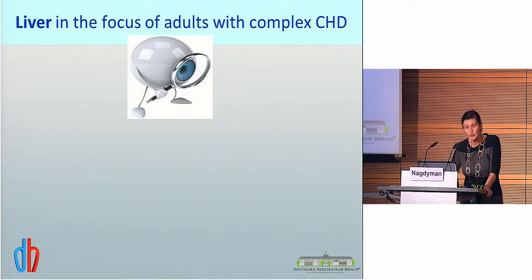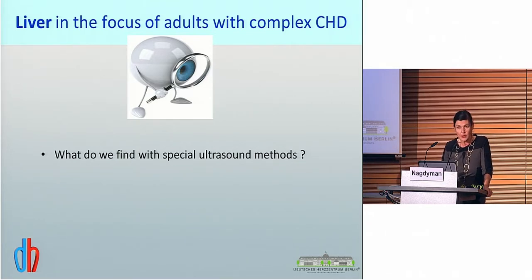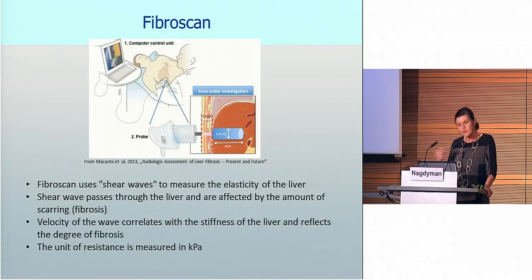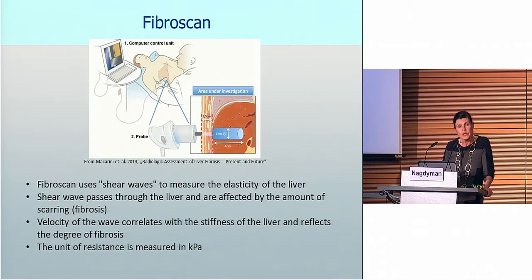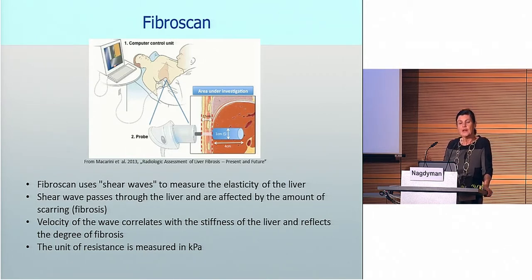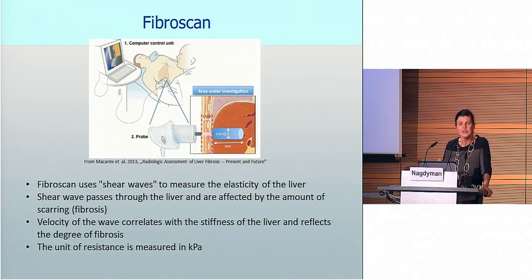What did we look for? We looked for special ultrasound methods to detect fibrosis and cirrhosis, serological markers, and the impact of these factors on possible liver changes. To explain these examinations: first, we used the FibroScan, performed in cooperation with gastroenterology centers in Munich and the Charité. The FibroScan uses shear waves to measure the elasticity of the liver; the shear waves are affected by the amount of scarring — fibrosis or cirrhosis — and the velocity of the wave correlates with the stiffness of the liver and reflects the degree of fibrosis.